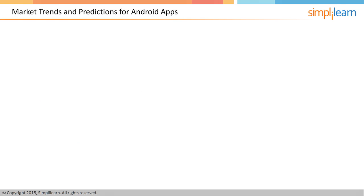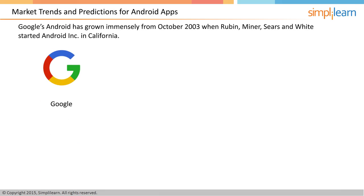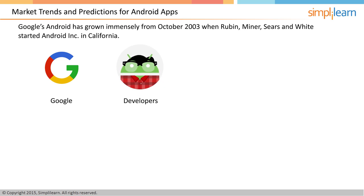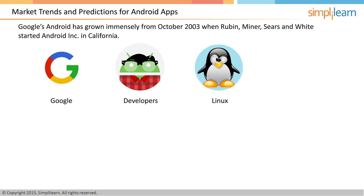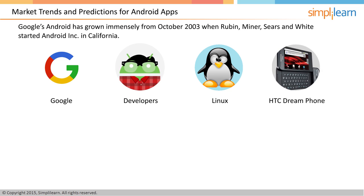Market trends and predictions for Android apps: Google's Android has grown immensely from October 2003 when Rubin, Miner, Sears, and White started Android Inc. in California. The popularity of Android did not come about in a day. Android developers braved buggy IDEs, OS fragmentation, slow emulators, and a boring user interface to get it to what it is today. Linux-based, open-source Android has boosted the fast-growing smartphone market worldwide. It released the first version on the HTC Dream Phone in 2008, and it took several iterations over the years to get it to what it is today.